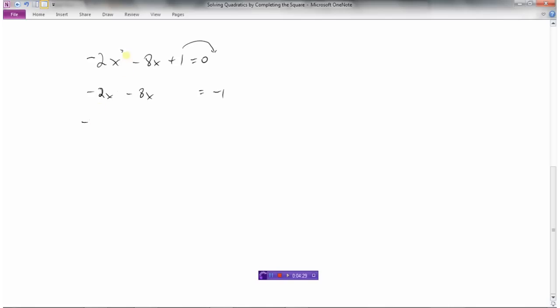Whoops, these were supposed to be x squareds. There we go. Now they're a quadratic equation. So we need to factor out this number in front of x squared. So when you divide by negative 2, this is going to jump to plus 4x. Just double check this, negative 2 times x squared, negative 2x squared, negative 2 times 4x, negative 8x. So when we divide these by negative 2, this is what we get.